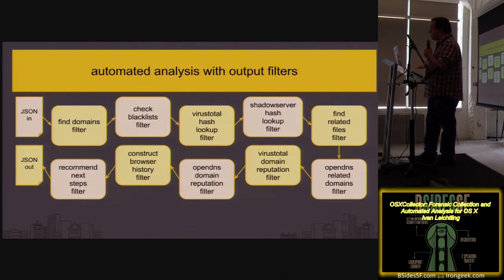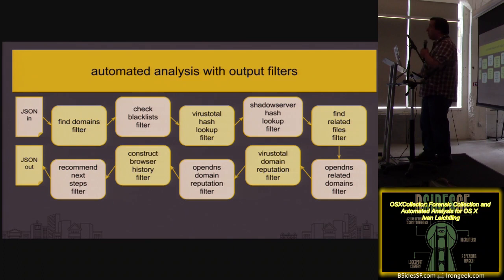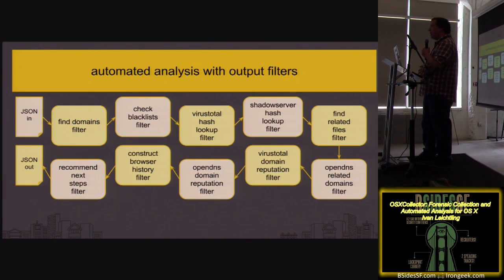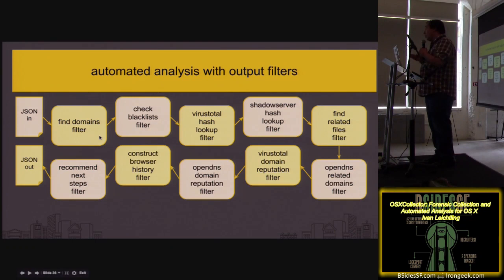We built this tool chain for OSX Collector analysis — it's all open sourced with the collector. We have this pipe and filter model where we can chain up all these different filters, and each filter does one thing with the data. For example, the find-domains filter — is there a domain in this data? If it finds a domain, it just adds another key to the JSON saying 'here are the domains I found.' We'll walk through roughly the flow of this simple analysis where we chain together all this stuff for automated results.